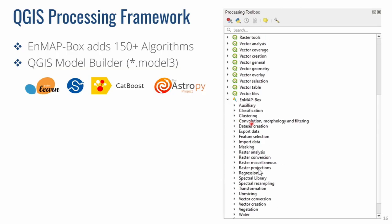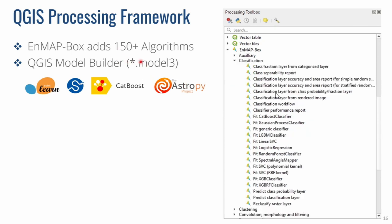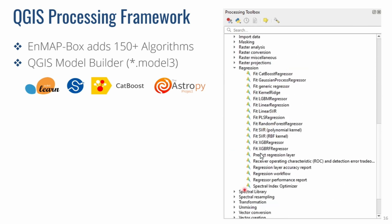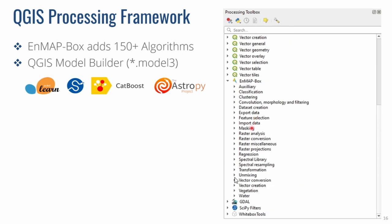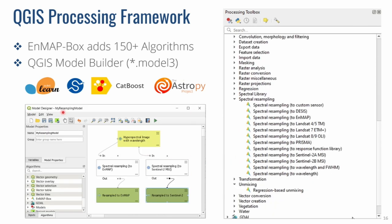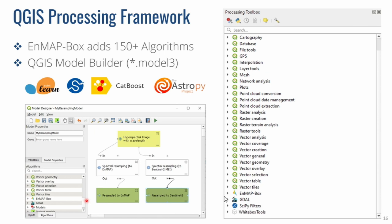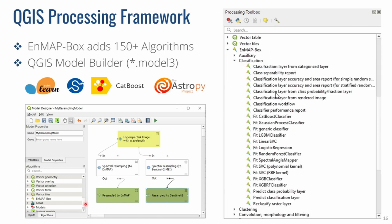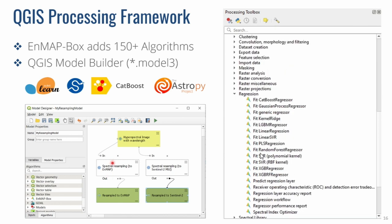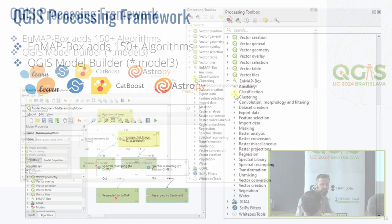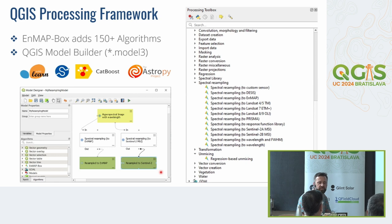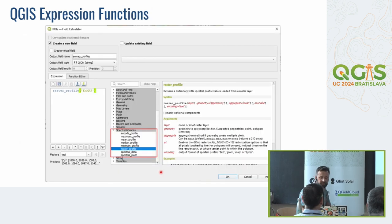The EnMAP Box also adds more than 150 algorithms to the QGIS processing toolbox — quite a lot related to classification and regression tasks. You can also use them in the graphical model designer. For example, here is a small model that takes a hyperspectral image and resamples it to the wavelength configuration of EnMAP and also to the wavelength configuration of a Sentinel-2 image.